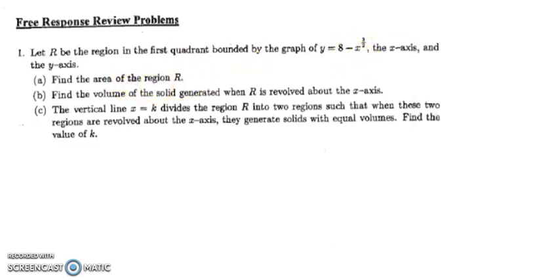So it says find the area of the region. To find the area of the region, we just have to integrate 8 minus x to the 3 halves. And we want the first quadrant, so we start at x equals 0 and we go up to x equals 4.